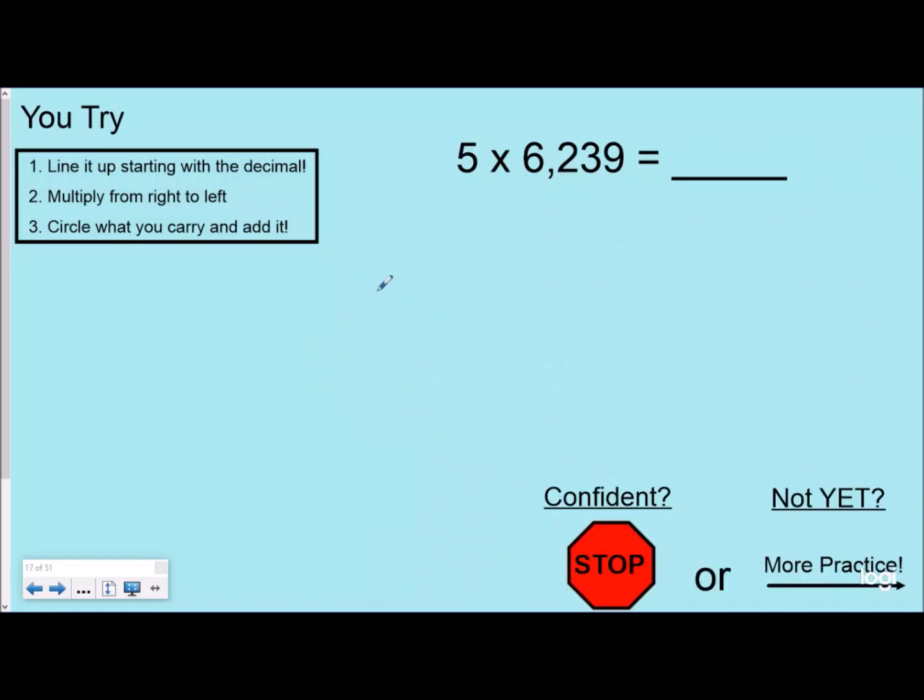Now you try. Use your commutative property, put your bigger number on top, and then once you get done, see how you did with your answer. If you feel confident you got it right, go ahead and stop the video. If you haven't got it yet, with your growth mindset, go ahead and keep watching for more practice. But pause the video and try this problem.